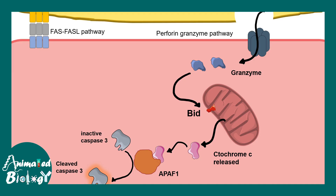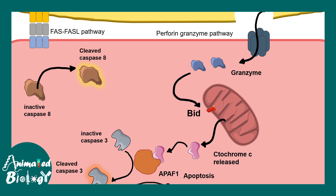Side by side, the FasL-mediated pathway can also operate, activating caspase 8. Caspase 8 activation ultimately leads to activation of caspase 3 as well. So caspase 3 is the executor caspase, while caspase 8 and others are initiator caspases. Ultimately, the fate of the cell is death — by killing the cell, it ensures the virus does not spread to nearby cells.